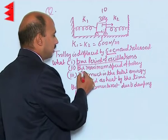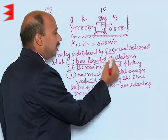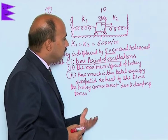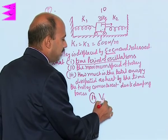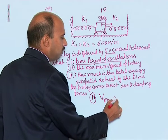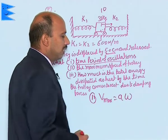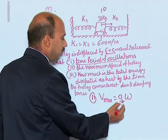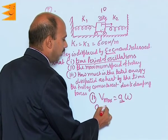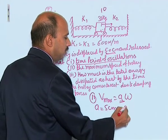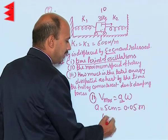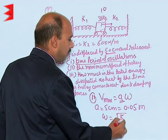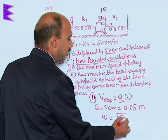Now see the second part, the maximum speed of trolley, that means amplitude of velocity, velocity amplitude. Velocity amplitude, that is called maximum velocity, is equal to A into omega, where A is equal to amplitude that is given to you 5 centimeter is equal to 0.05 meter, and omega can be written under root of k upon m, that is k equivalent.